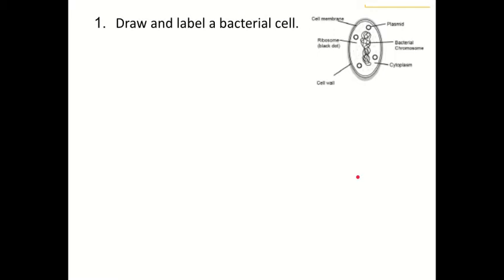For question number one it says to draw and label a bacterial cell. Sometimes they're drawn different ways and that's absolutely fine. So we have a cell membrane on the inside, cell wall on the outside, cytoplasm, ribosomes, and then we have plasmids — multiple of these in the cytoplasm — and then in the middle we have a bacterial chromosome. The main thing to remember here is that bacterial cells do not have a nucleus. Their DNA is free in the cytoplasm in the form of a bacterial chromosome and multiple plasmids.